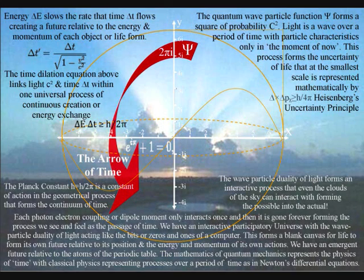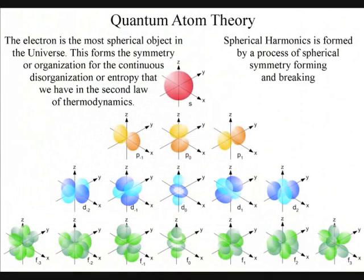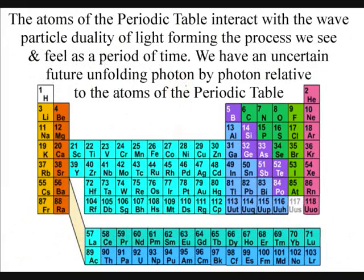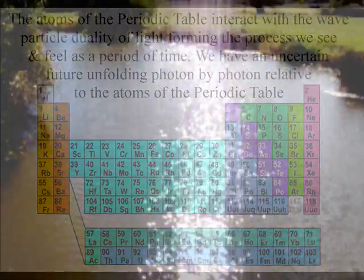We see and feel this process as the passage of time, with each photon oscillation only occurring once, with the different types of atoms vibrating at different rates, to generate or absorb light resonating at different frequencies.